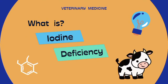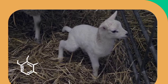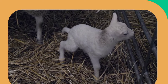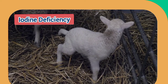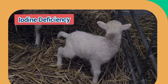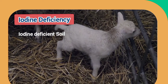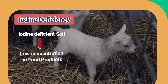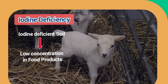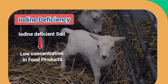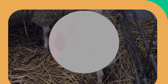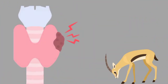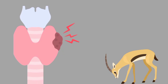What is iodine deficiency in animals? Let's discuss. Iodine deficiency occurs when the soil is poor in iodine, causing a low concentration in food products and insufficient iodine intake in the population.